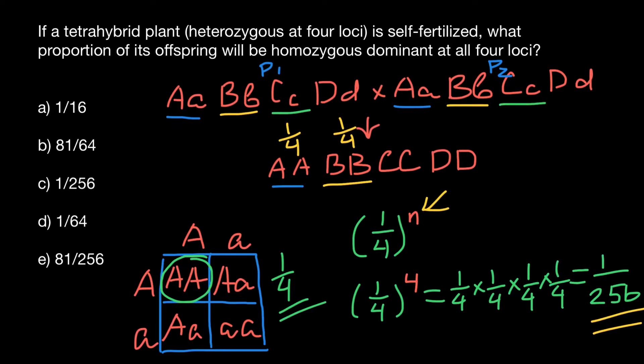For locus C, if we cross two heterozygous parents, the probability that their progeny will be homozygous dominant is again one quarter.